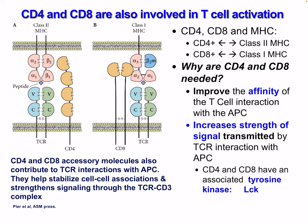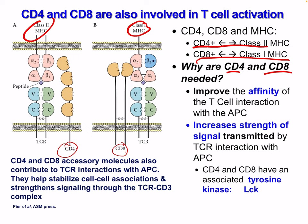CD4 interacts with MHC class 2 and CD8 with MHC class 1. CD4 and CD8 are needed to improve the affinity of T cell interaction with APC — this increases the strength of the signal transmitted by the T cell receptor. CD4 and CD8 have an associated tyrosine kinase called LCK. These accessory molecules also contribute to T cell receptor interactions with APC, helping stabilize cell-to-cell association and strengthening signaling through the T cell receptor-CD3 complex.